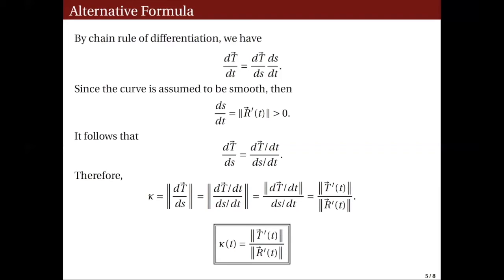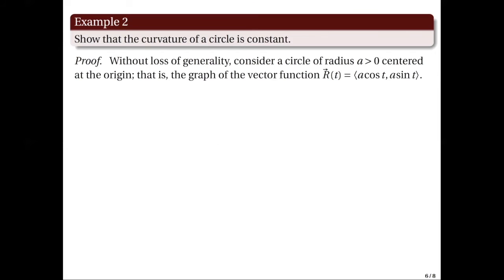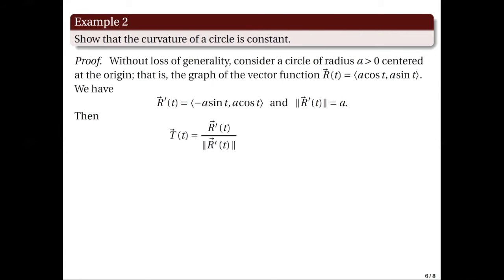Let us use this alternative formula to prove that the curvature of a circle is constant — meaning the amount of bending at every point on the circle does not change. Without loss of generality, let us consider a circle centered at the origin of radius equal to some positive constant A. That will be parametrized by the vector function R(t) = (A cos t, A sin t). Differentiating R, we get R'(t) with the following components, and when we solve for the norm of R'(t), we get the constant A. From this, we can solve for the unit tangent vector T, which is the normalized form of R'(t).